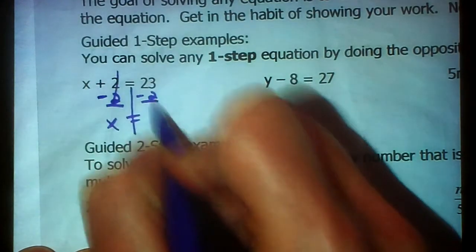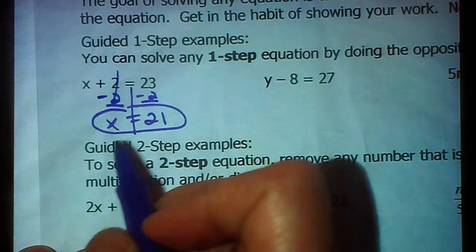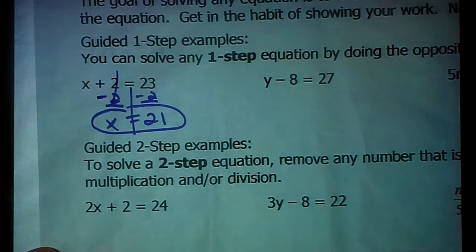Twenty-three minus two, that's twenty-one, and you're done, because X is all by itself. It's a lonely thing, solving equations.